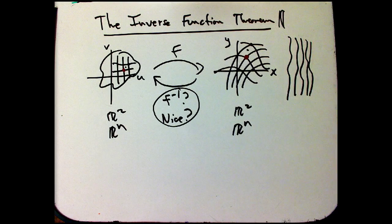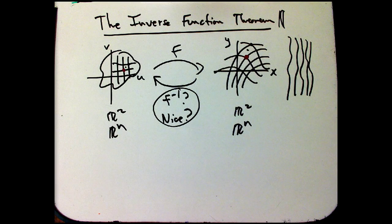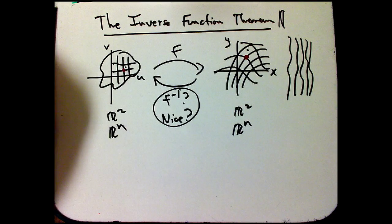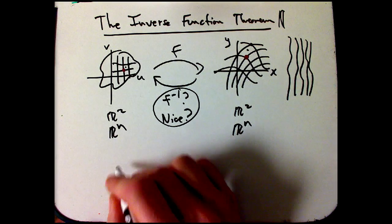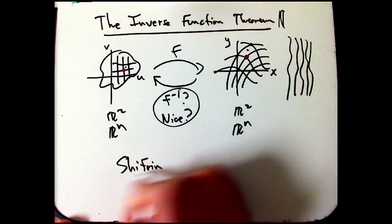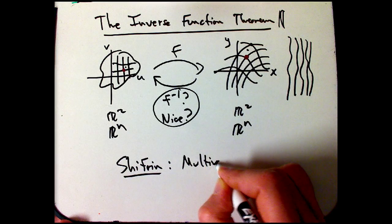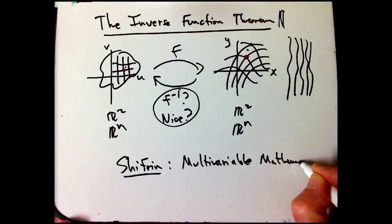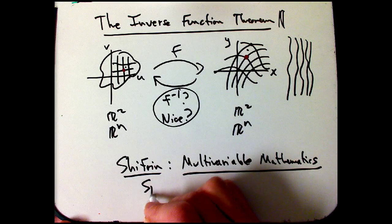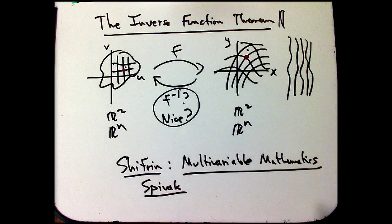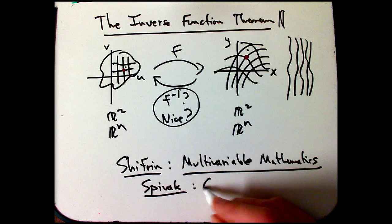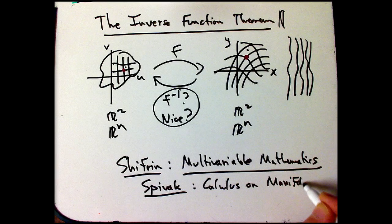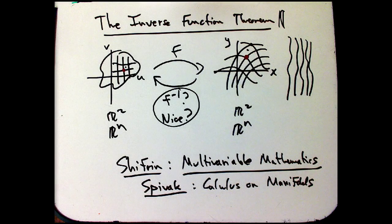So there's many books that have proofs of the inverse function theorem. A lot of them are pretty similar. I'm loosely basing what I'm saying out of Ted Schifrin's book, Multivariable Mathematics. So I'll put that up there, Schifrin, it's a good source. But I'm greatly expanding on what he says. I'll also make reference to Spivak and his nice little book, Calculus on Manifolds. And I'll make brief mention of Hubbard and Hubbard's book on vector calculus as well.